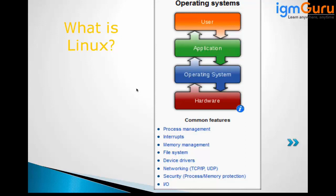So what is an operating system? An operating system is a program which keeps your system up and running. As a user, we communicate through an application through the OS, and the OS will internally interact with the computer hardware.